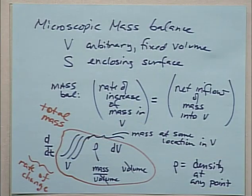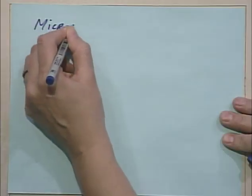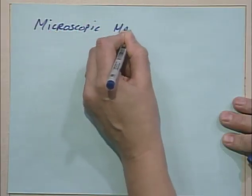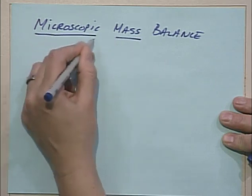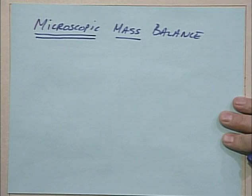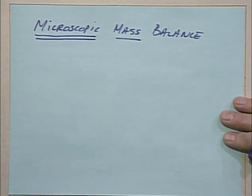Going through the derivation allows us to see what was assumed, and to sort through the final resulting equations to see which ones we need for rheology and how they differ from those used for Newtonian fluid mechanics. I've got this on the PowerPoint slides and we've been doing it live. Last time I wrote this — not neatly enough — so I'll start over. We'll get to the microscopic mass balance. You should have some of this already written down.